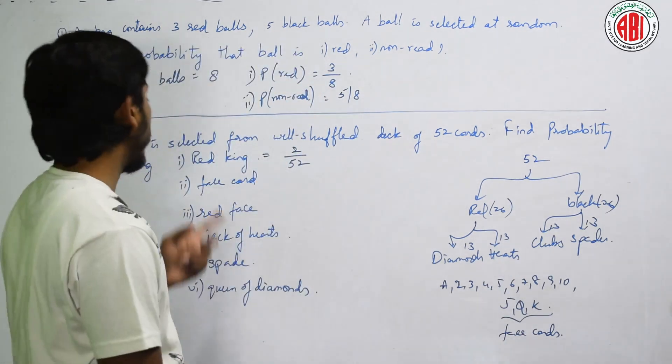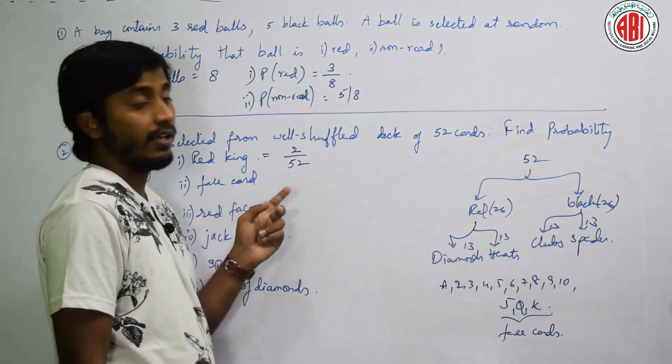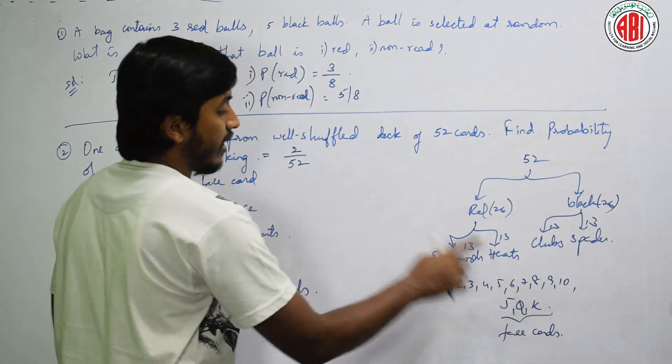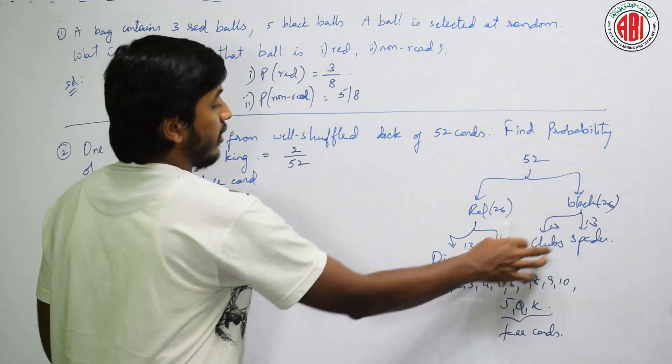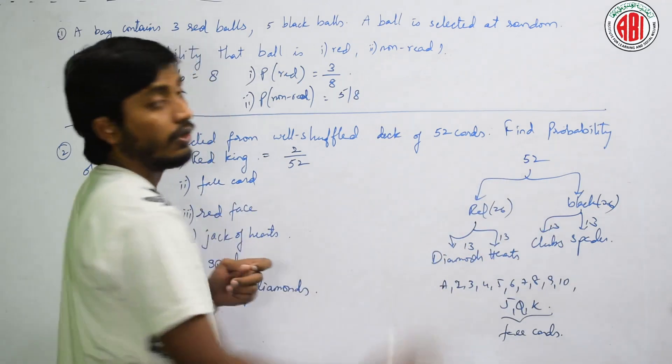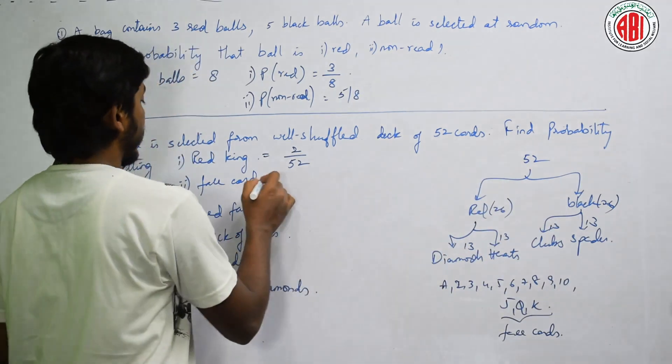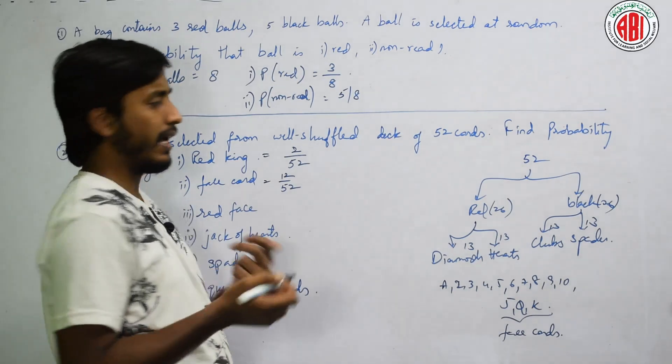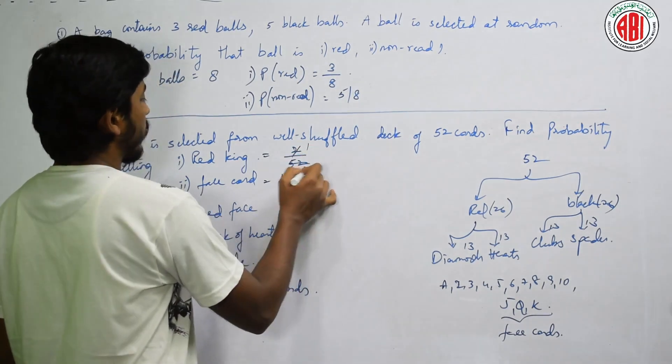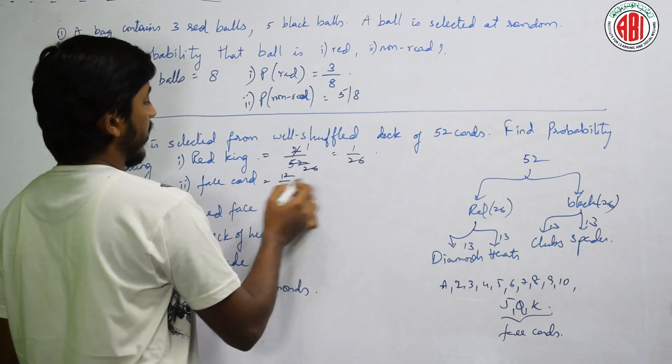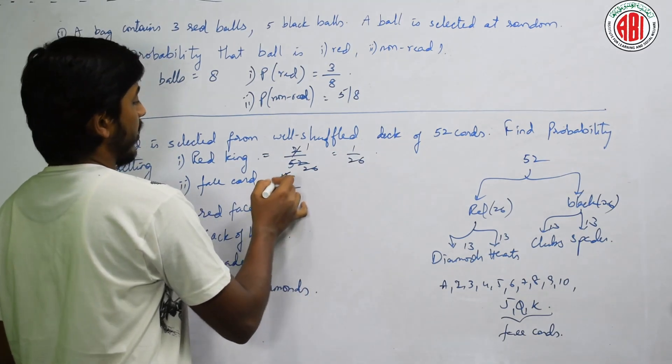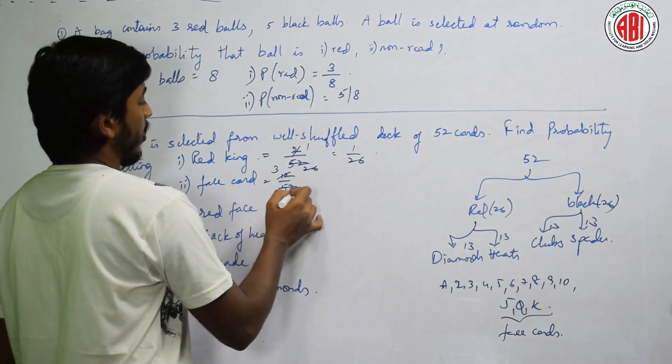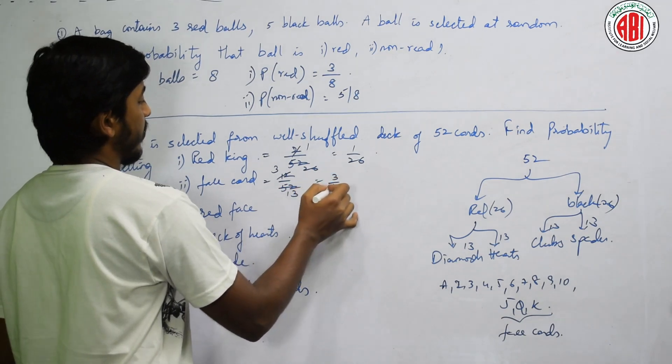Next. See, face card kitne hai? Pure 3 face cards in one set. So 3, 3, 3, 3 - that's 6, 6. Total 12. That is 12 by 52. If you want to cancel, you can. 2 ones, 2, 26. That is 1 by 26.